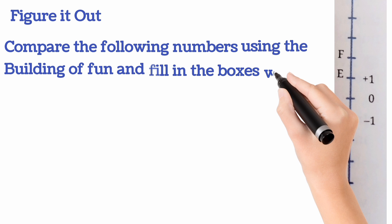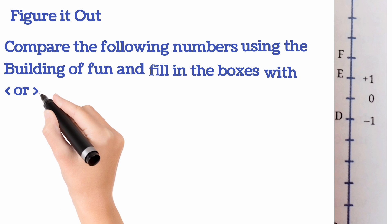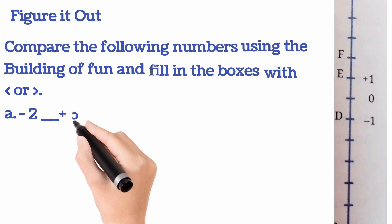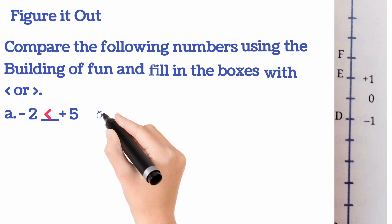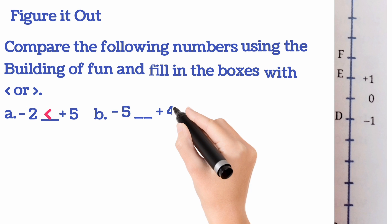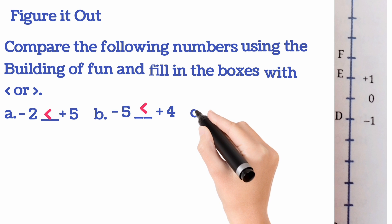Our question is compare the following numbers and fill in the boxes with greater than or less than. So, let us start question number A. That is given minus 2 and plus 5. I told you positive integers are bigger than negative integers. So, plus 5 is greater than minus 2. Now, next sum number B. That is minus 5 and plus 4. Here also easy, very easy. Positive integer is plus 4. This is greater than minus 5 which is negative integer.